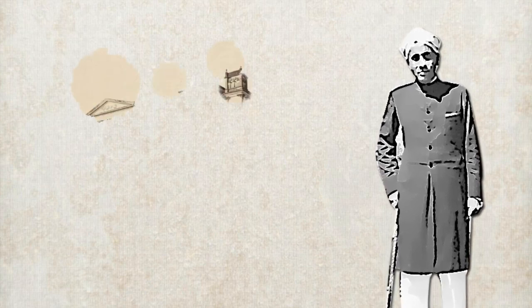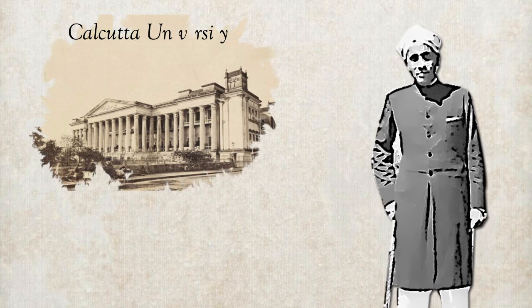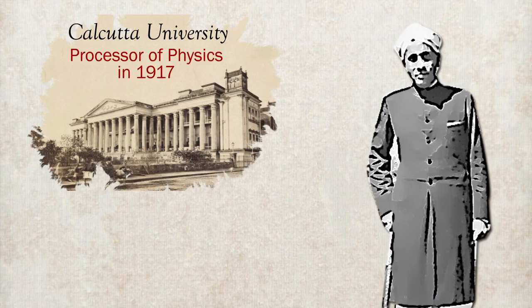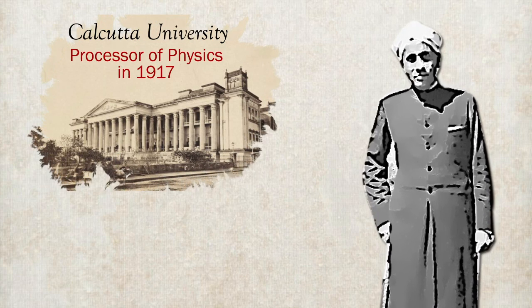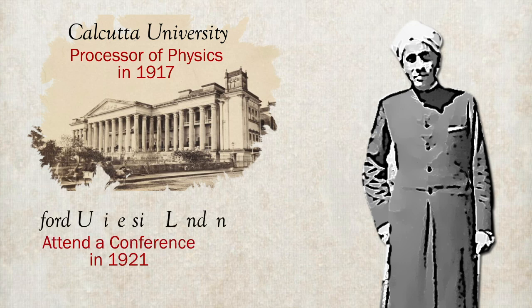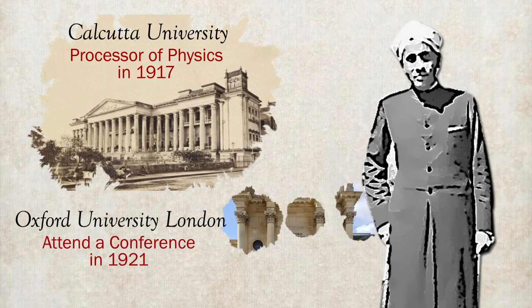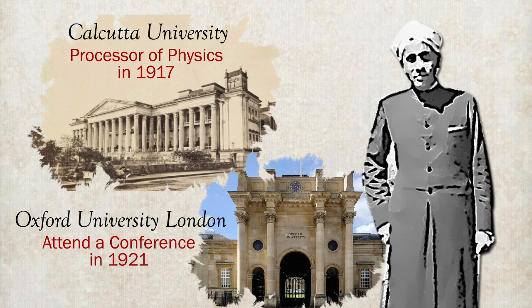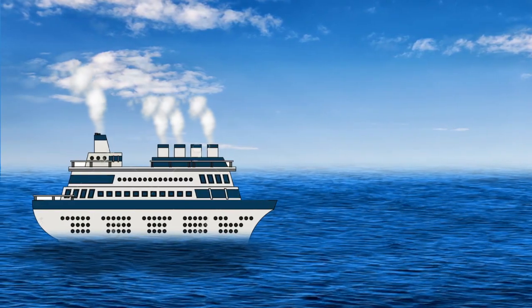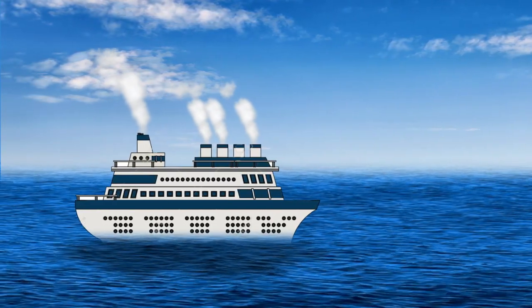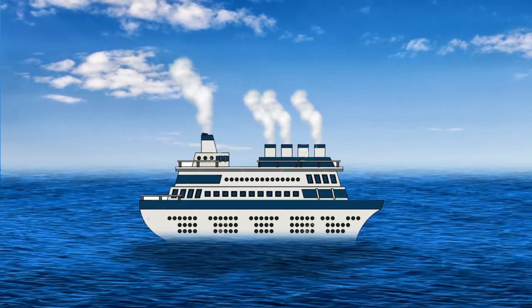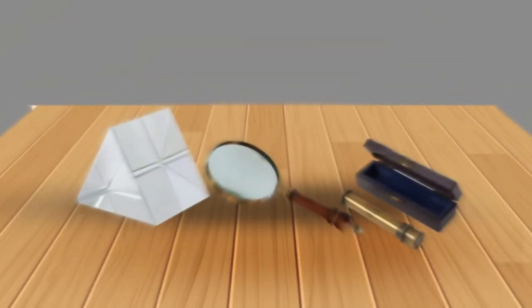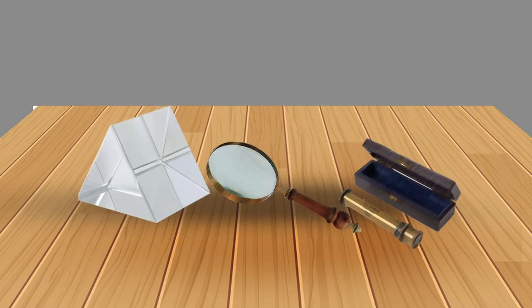On the basis of his knowledge and research, Kolkata University appointed him as a Professor of Physics in 1917. In 1921, Raman got an opportunity to attend a conference of universities held at Oxford University, London. Aboard the ship, Raman had carried with him some simple optical equipment including a pocket-sized spectroscope and a prism.